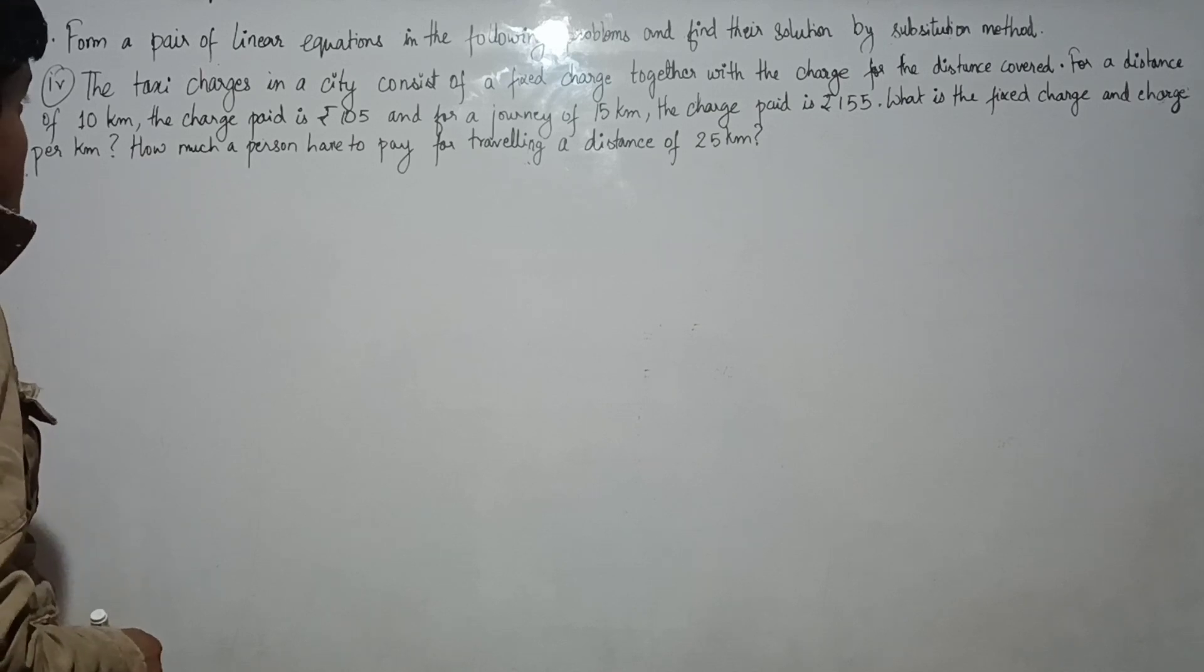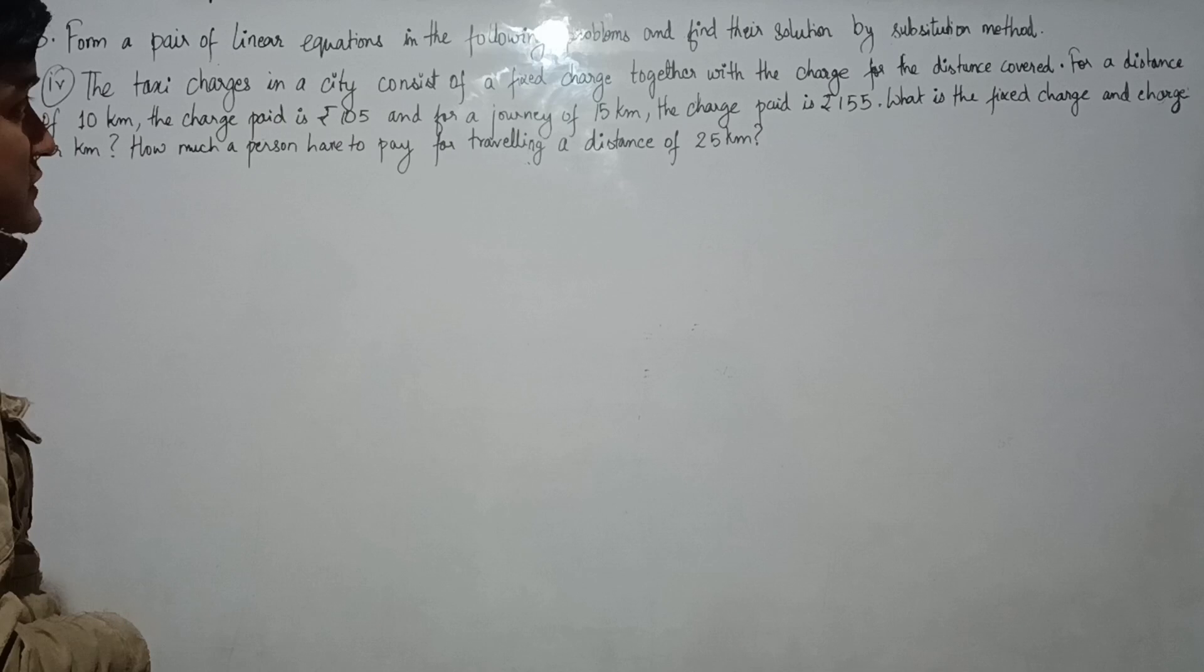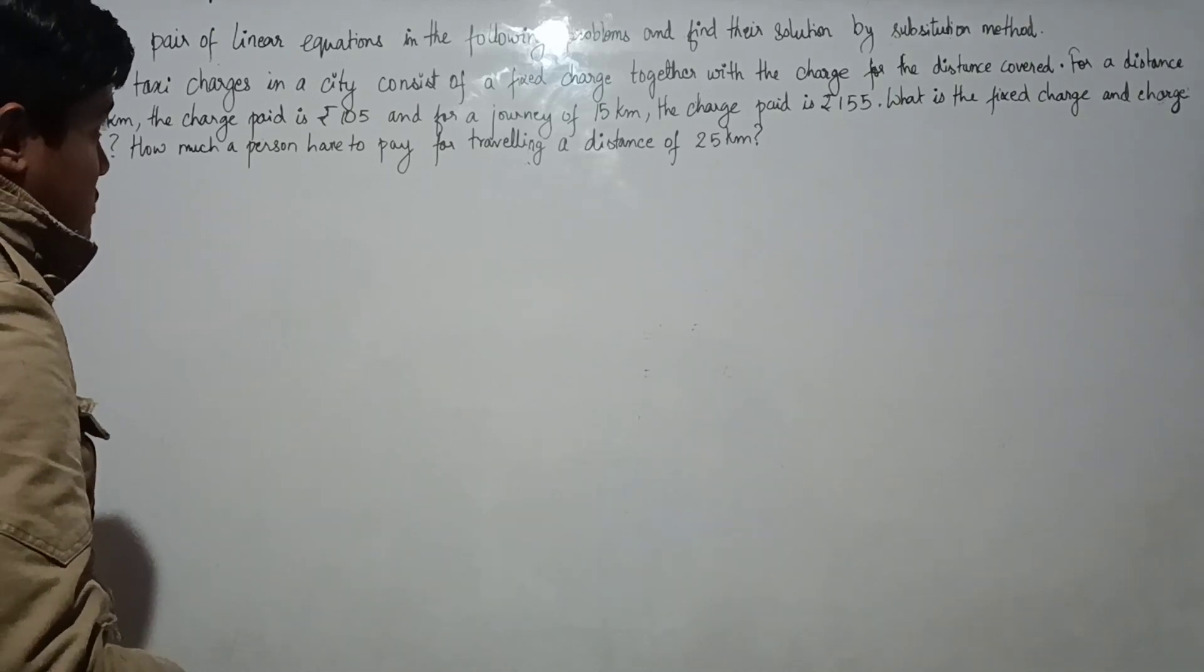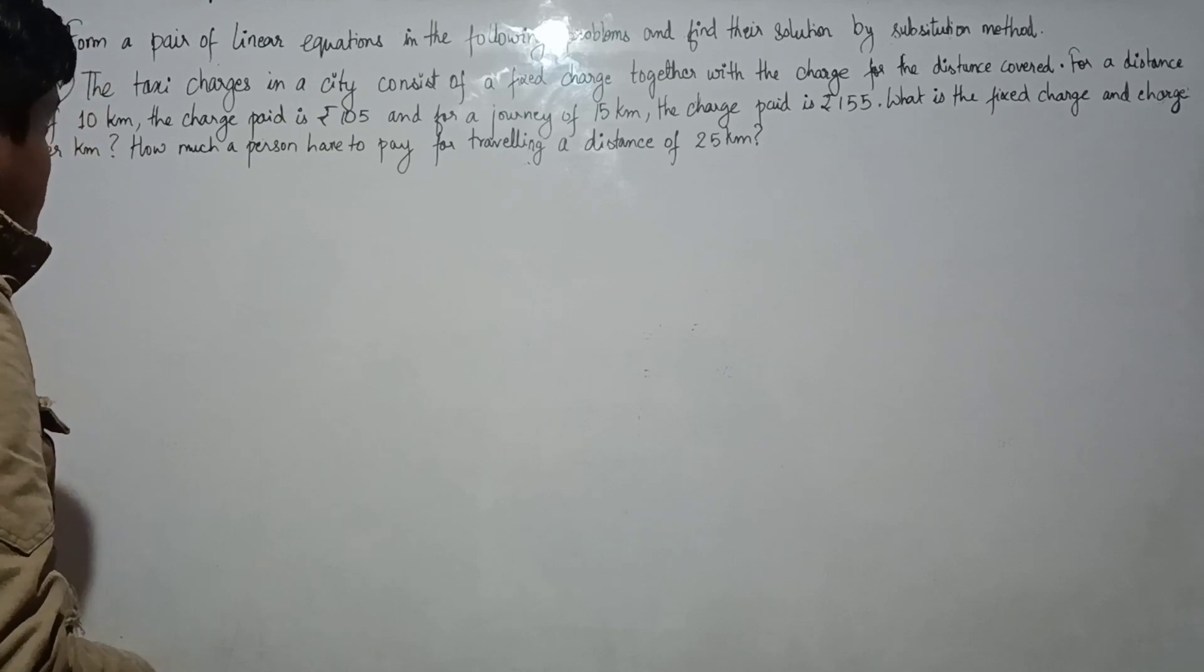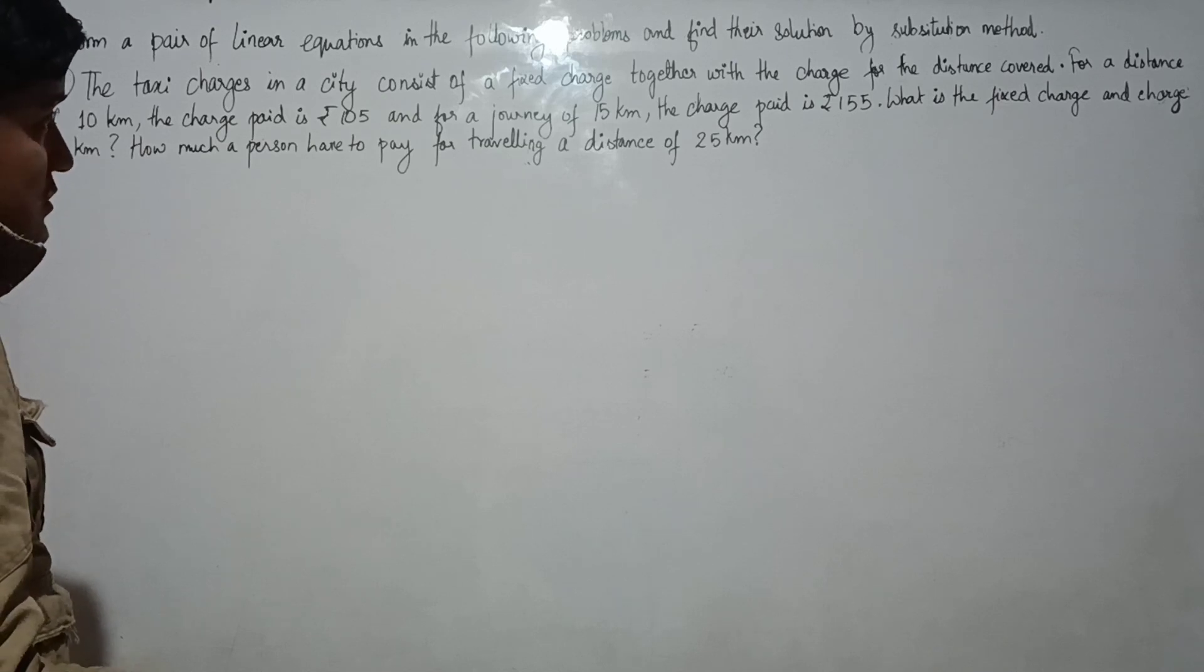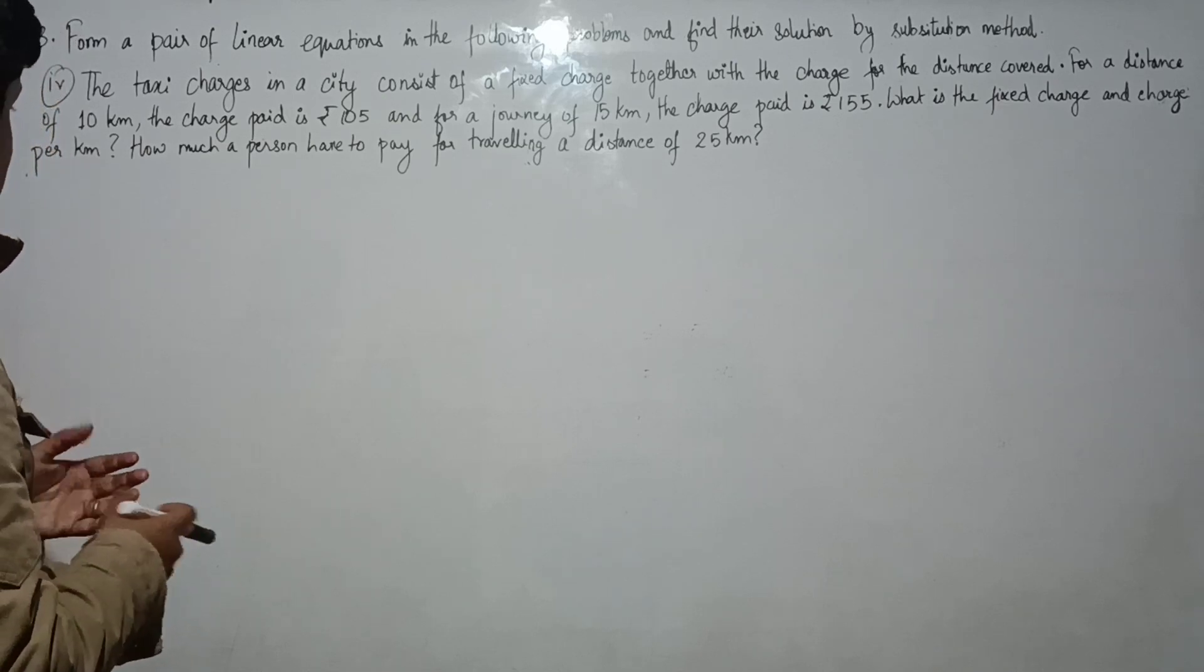The taxi charges in a city consist of a fixed charge together with the charge for the distance covered. For a distance of 10 km, the charge paid is Rs. 105. And for a journey of 15 km, the charge paid is Rs. 155. What is the fixed charge and charge per km?